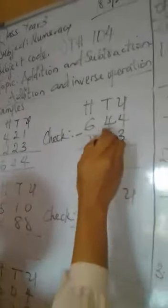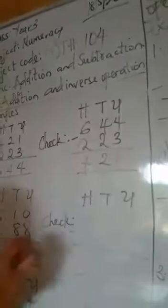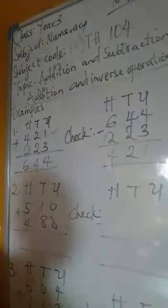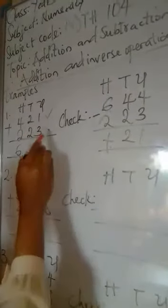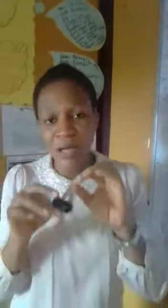So I have 4 minus 3 is 1, 4 minus 2 is 2, 6 minus 2 is 4. So you have seen that I have gotten back my 421. So I can equally use 644 to subtract 421. If I do that, I should be getting 223 as my answer. That's just a simple way to check if what you've added, if your calculation is correct.